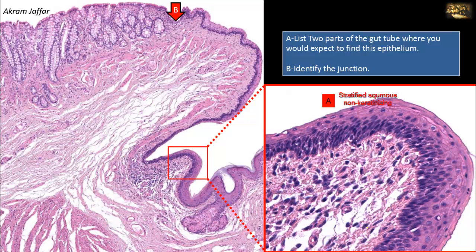The epithelium on the left side of the arrow is simple columnar epithelium with multiple mucus-secreting goblet cells. There are no villi but there are crypts, so this is the large intestine. To the right side of the junction is stratified squamous epithelium. Therefore, we are at the anal canal, and junction B is the recto-anal junction.